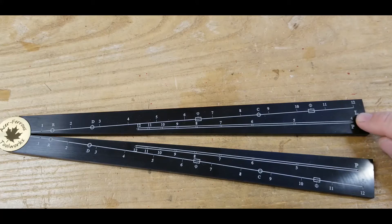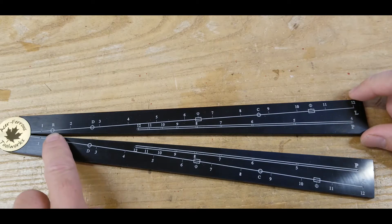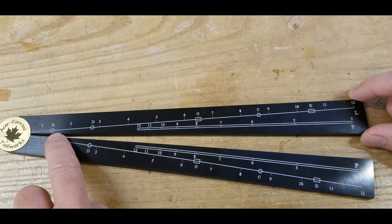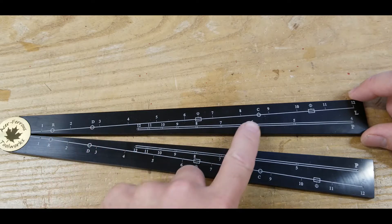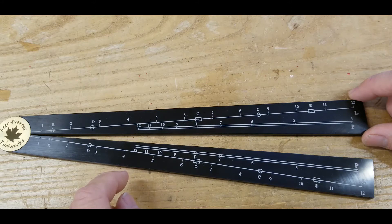There's a couple other functions we can do with the L scale. One has to do with circles. We have marked on the scale here where the little circles are radius, diameter, and circumference. Given any one of those three, we can calculate the other two.